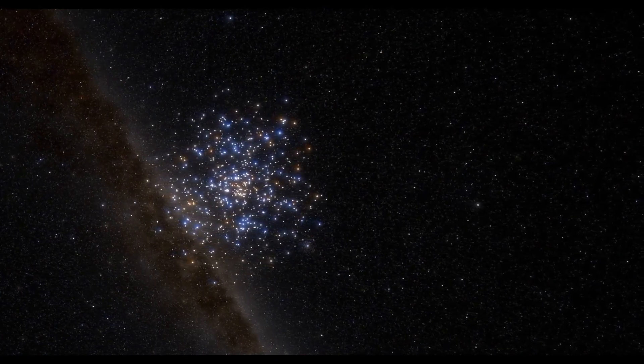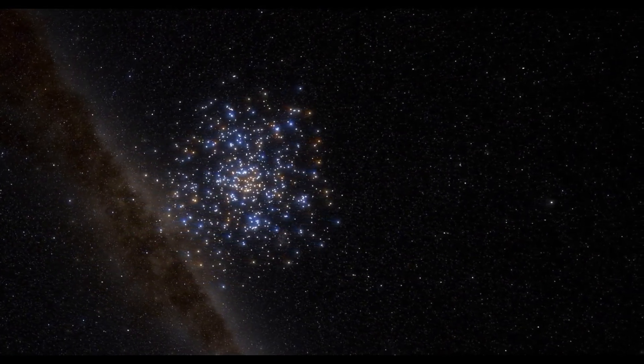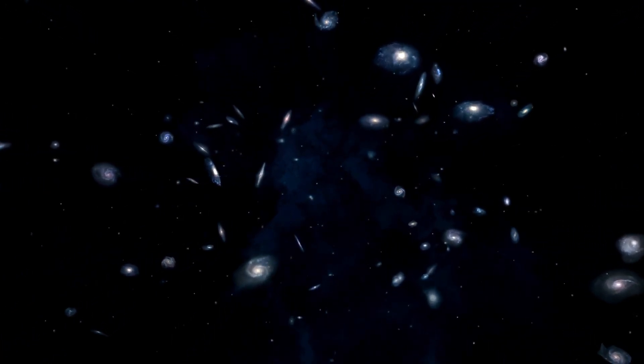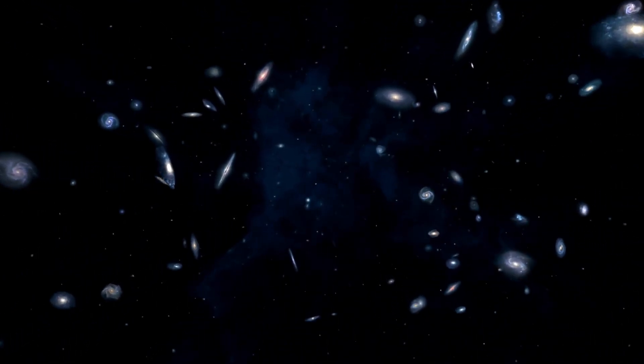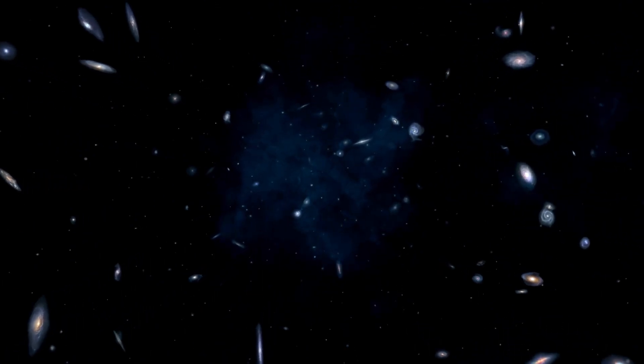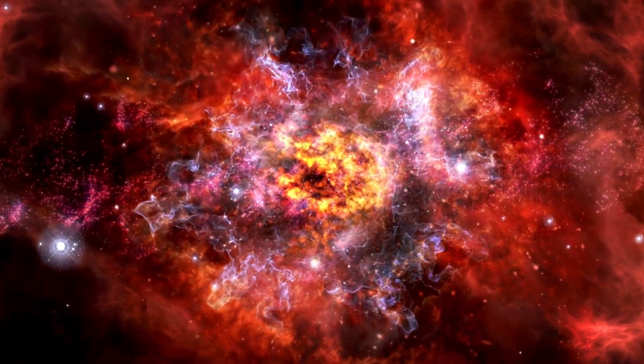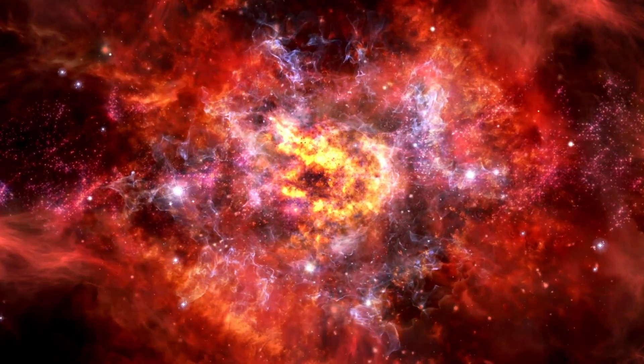Betelgeuse, a massive star in its late stages of life, is of immense size. Its dimensions are so vast that if it were positioned at the center of our solar system, it would extend as far as Jupiter's orbit. Eventually, this star will undergo a collapse, resulting in a powerful supernova explosion, which may lead to the formation of either a neutron star or a black hole.